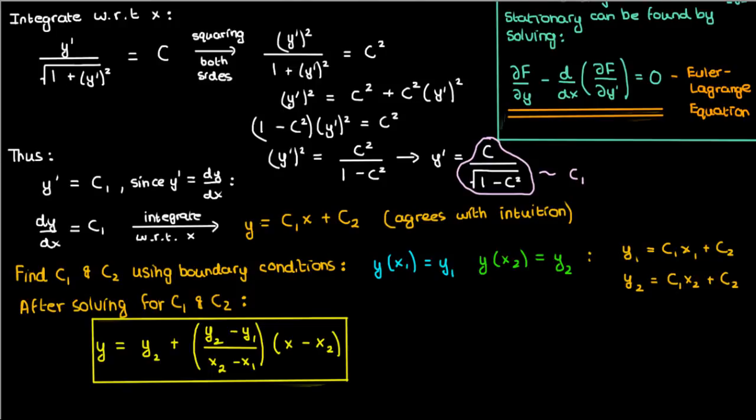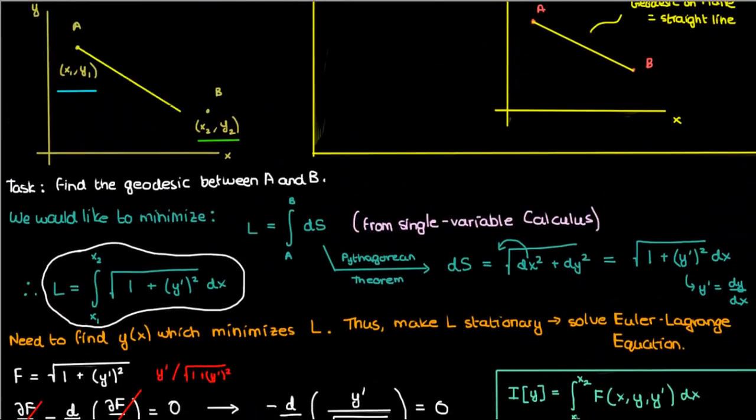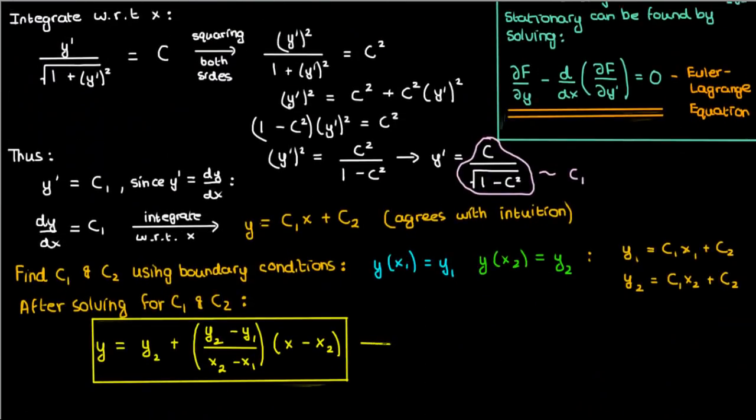However, in this situation, if you actually go back up, you can intuitively see that any variation on the straight line is actually going to make the path longer, and that's why the straight line we found here is indeed the geodesic or path of minimum distance.